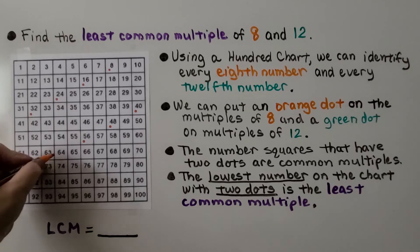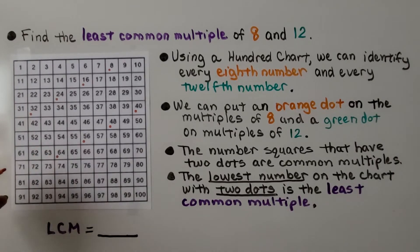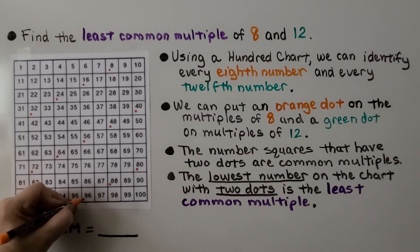8 times 7 is 56. 8 times 8 is 64. 8 times 9 is 72. 8 times 10 is 80. 8 times 11 is 88. And 8 times 12 is 96.